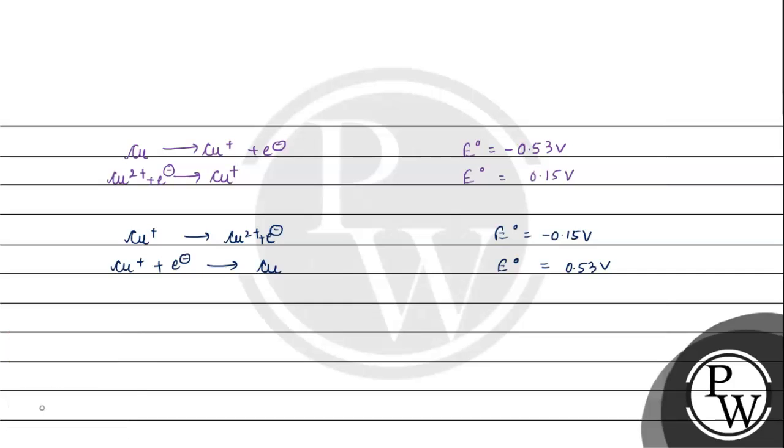If we add these two equations, electrons cancel and 2Cu⁺ gives Cu²⁺ plus Cu. E° will be 0.53V minus 0.15V, which gives us 0.38V.